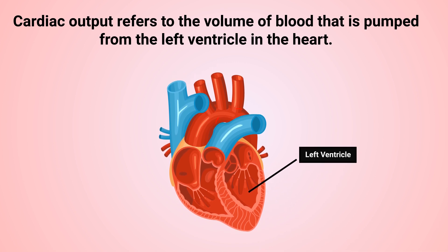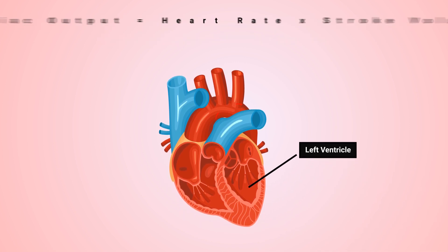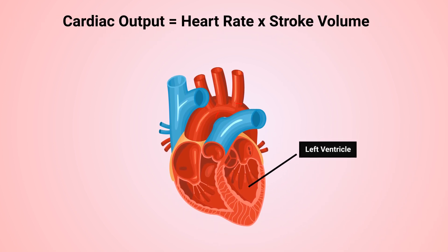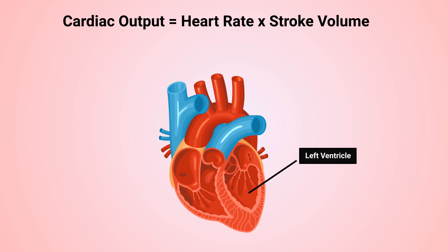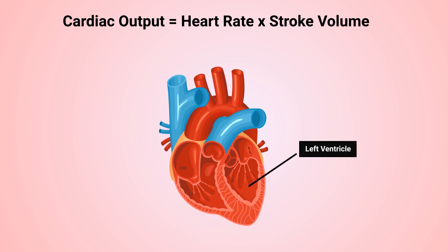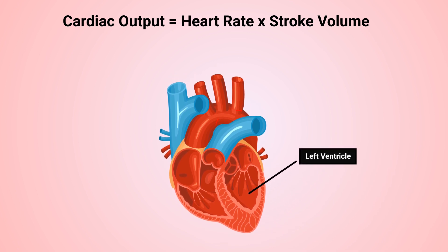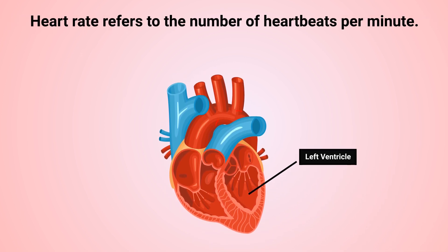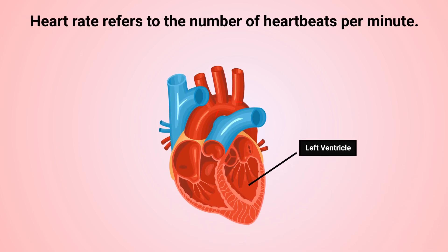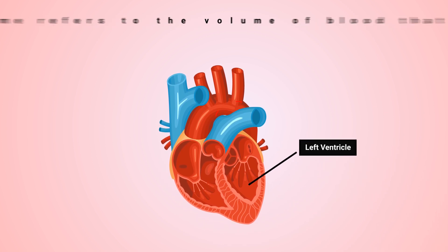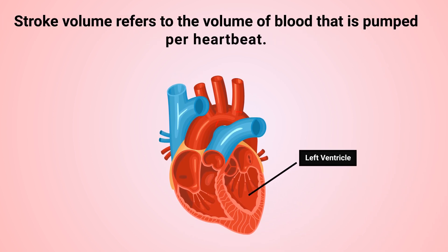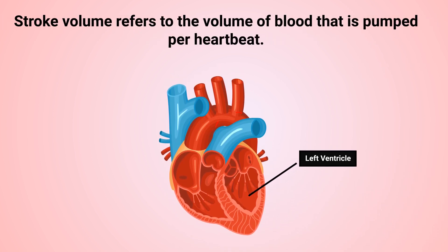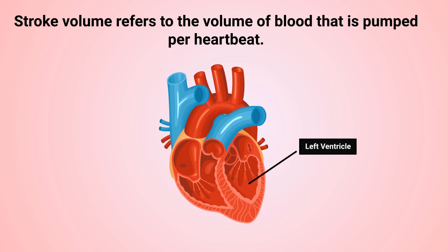Cardiac output can easily be calculated by multiplying the patient's heart rate by their stroke volume. Heart rate refers to the number of heartbeats per minute, and stroke volume refers to the volume of blood that is pumped per heartbeat.